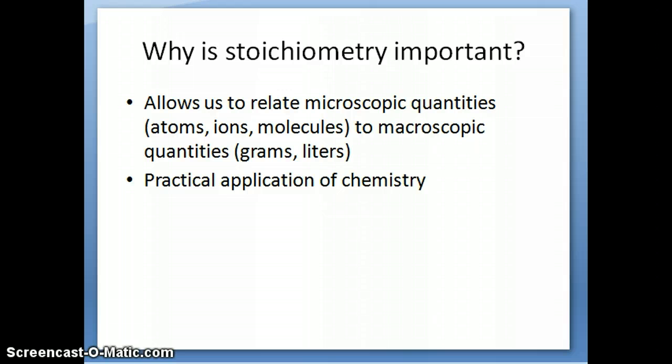Why is stoichiometry so important? There are two main goals. One is it allows us to relate microscopic quantities, things like atoms, ions, and molecules, to macroscopic quantities, things that we can measure in terms of units of grams, liters, and other units of masses and volumes. The other thing that's very important is stoichiometry has very much a practical application in chemistry.